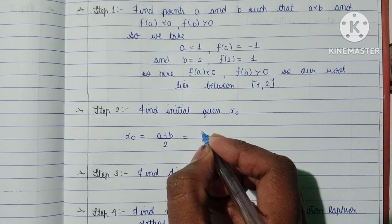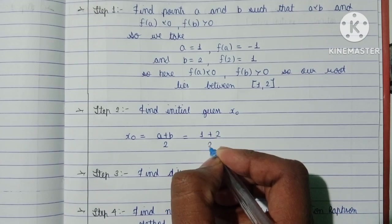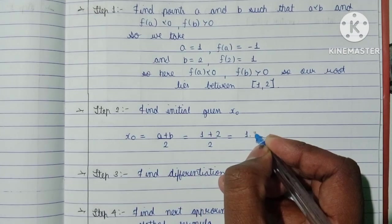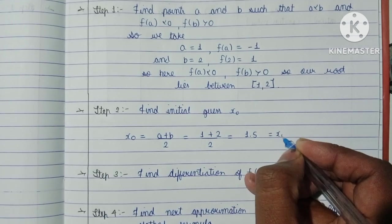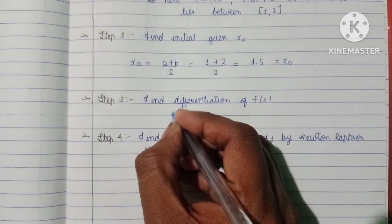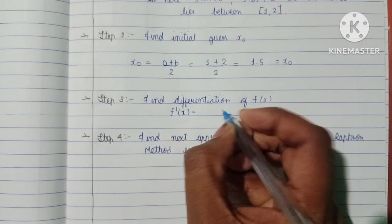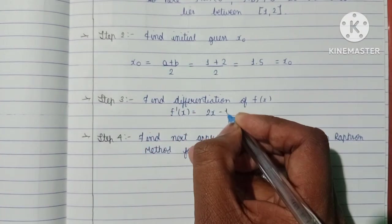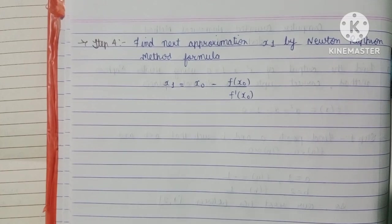Now we find our initial guess x₀, which is the midpoint (a+b)/2. So x₀ = (1+2)/2 = 1.5. Step 3 is finding the differentiation: f'(x) = 2x - 1.